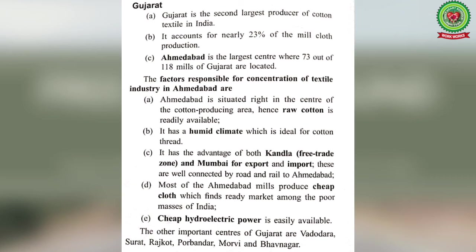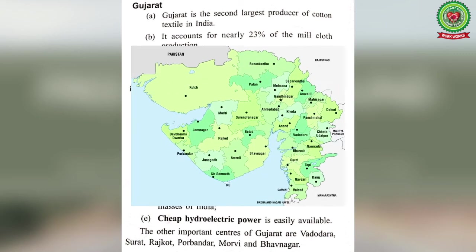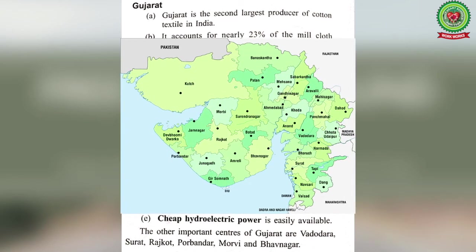Ahmedabad is well connected by roads and rail. Most Ahmedabad mills produce cheap cloth that finds a ready market among the poor masses of India. Cheap hydroelectric power is also easily available. The other important centers of Gujarat are Vadodara, Surat, Rajkot, Porbandar, Morvi, and Bhavnagar.